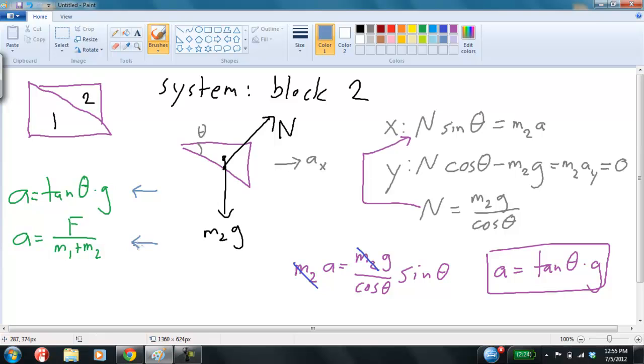Okay. So I didn't have to use the F equals ma equations for block one. Had I done so, I wouldn't have had to use the F equals ma equations for the whole system. But it turns out that it was a little bit more insightful to do it this way than to work through the equations for block one, and then show that the x components of the normal force cancel out.